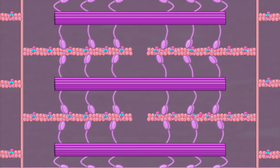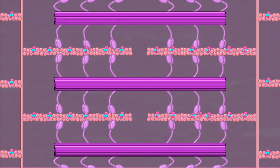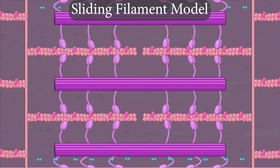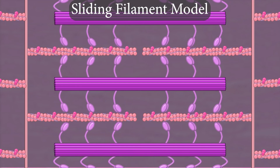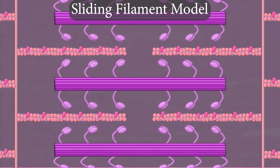Because actin filaments are sliding past myosin in this model of muscle contraction, it is often called the sliding filament model of muscle contraction.